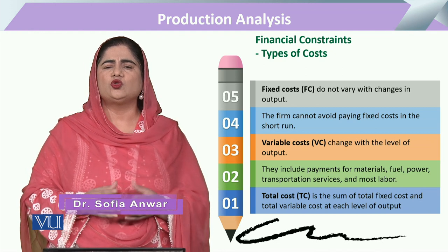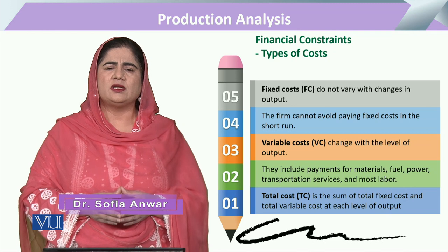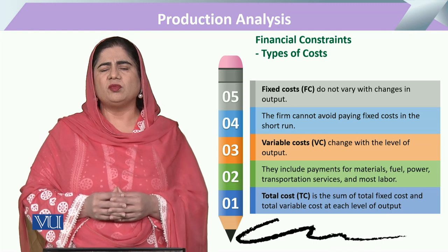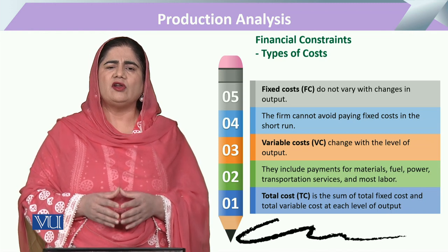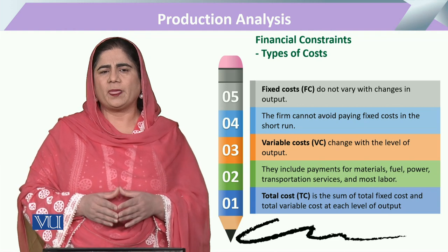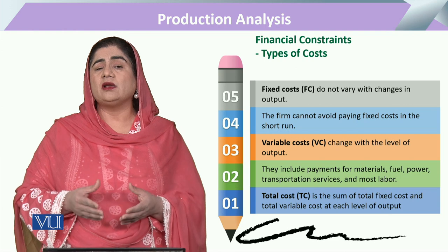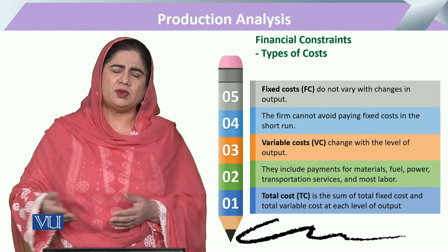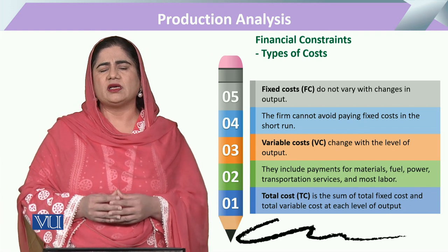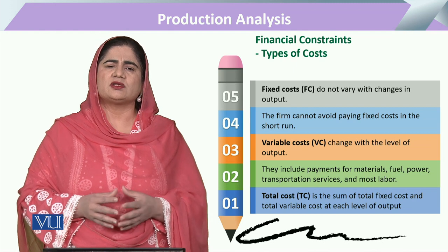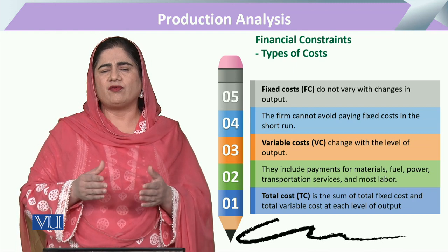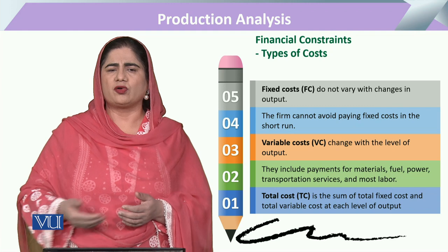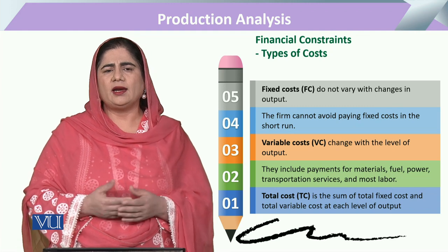Mostly these costs are divided into two parts: one is the fixed cost and the other is the variable cost. When we say fixed cost, it means this is the cost that will not change — it will remain fixed. But for the short run period these costs will be fixed, whereas when we take any project for the long run period, there are no costs that are fixed, because we can change even the short run fixed costs in the long run.